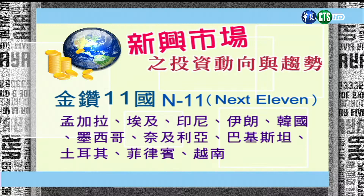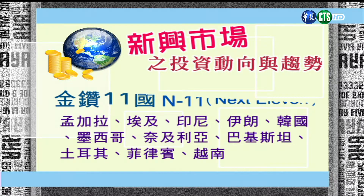接下来到90年代中期过后另外有个新名词，经济规模稍微比较小、人口大概在5000万左右、市场已慢慢开放、需要一些基础建设的新兴国家慢慢出来，有所谓的Next Eleven（金砖之外的十一国），规模比较中型的，像孟加拉、埃及、印尼、伊朗、韩国、墨西哥、奈及利亚、巴基斯坦、土耳其、菲律宾跟越南。